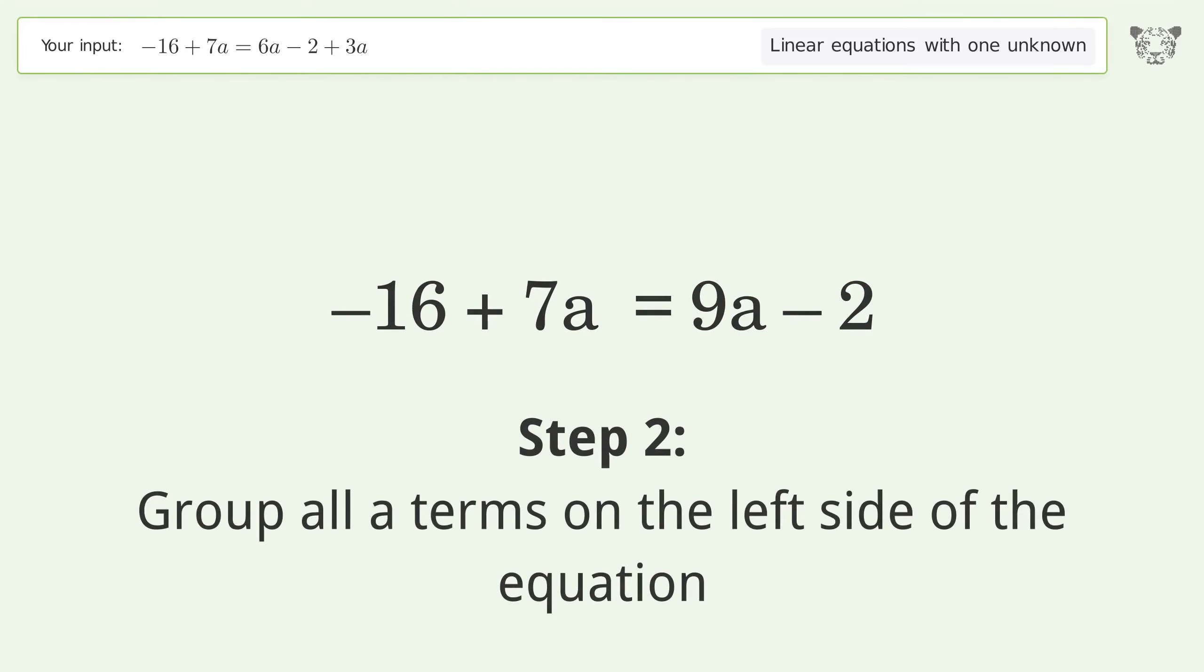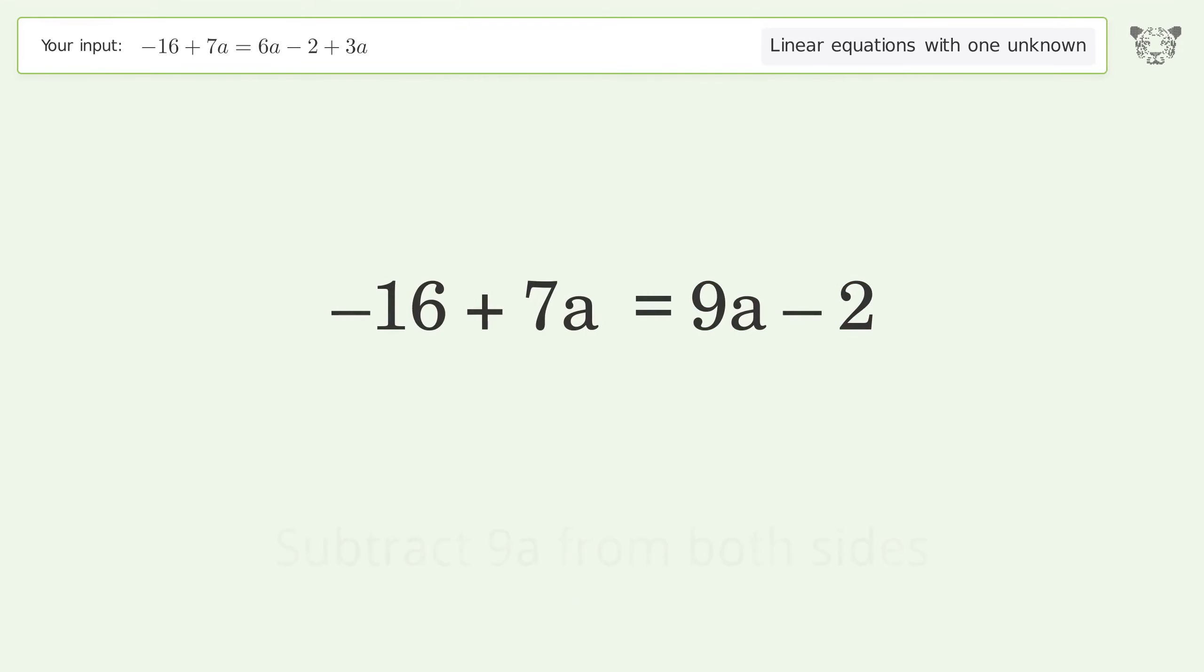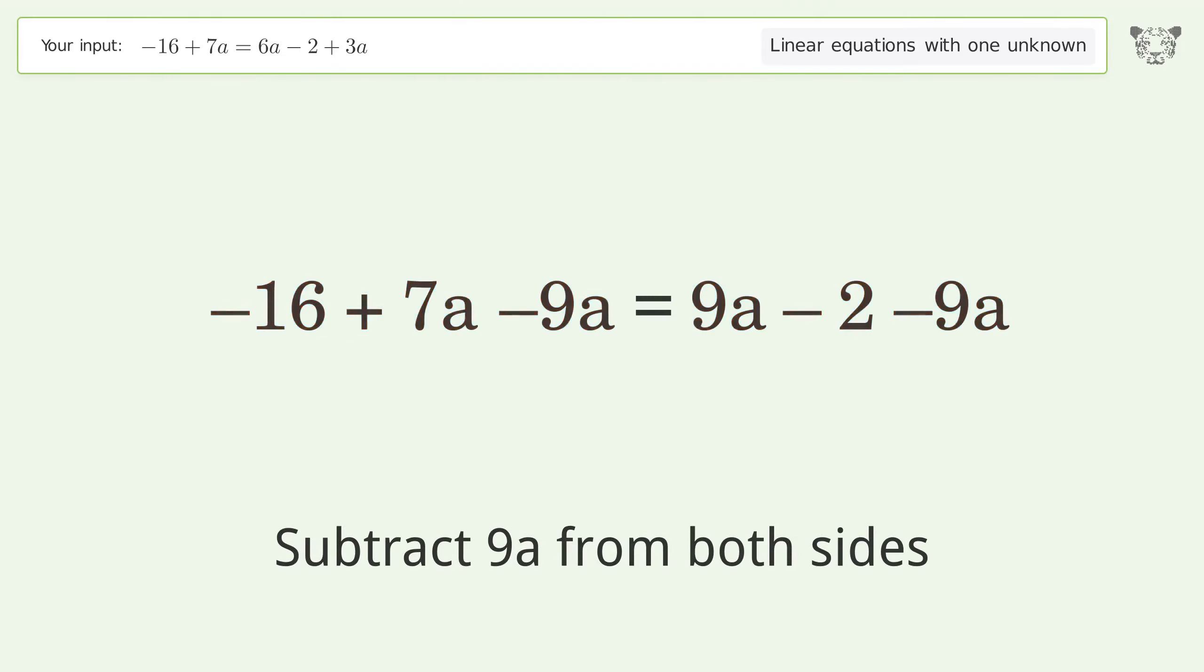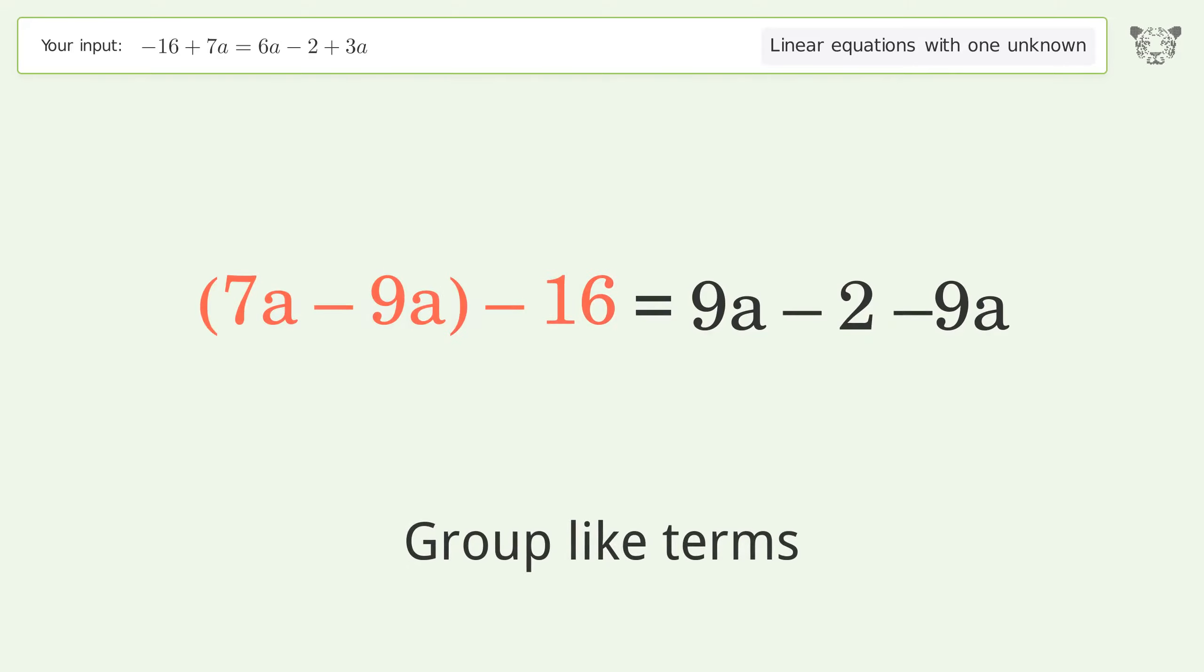Group all a terms on the left side of the equation. Subtract 9a from both sides. Group like terms. Simplify the arithmetic.